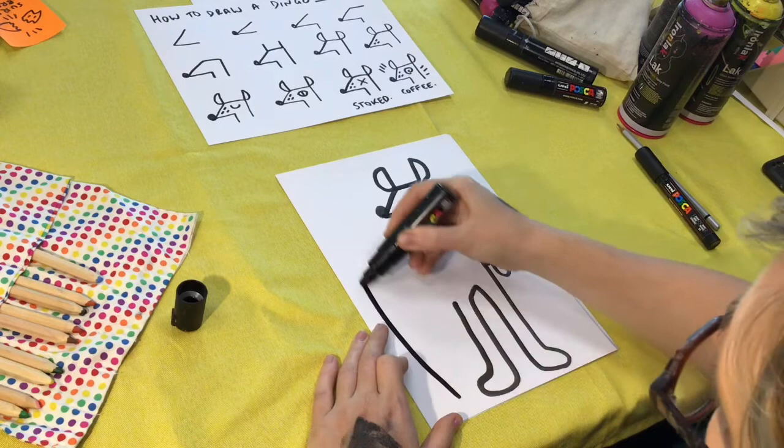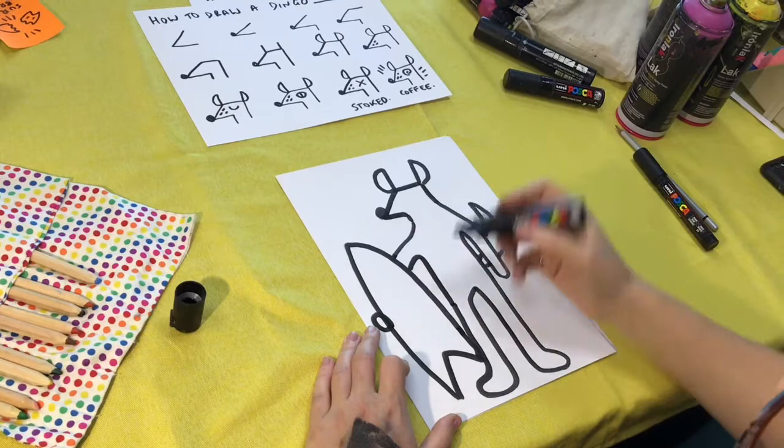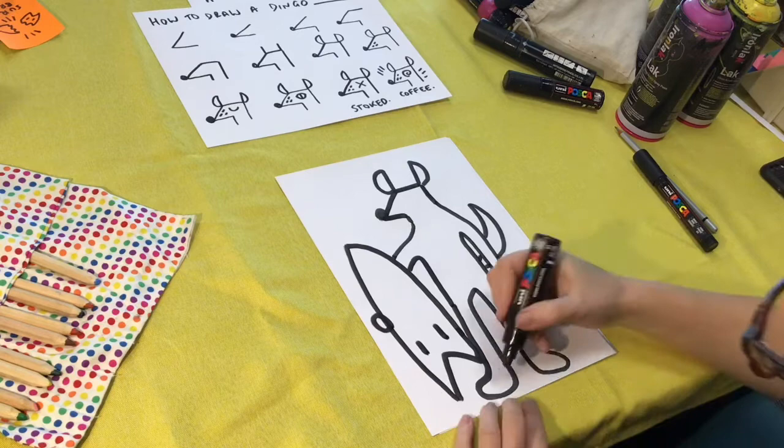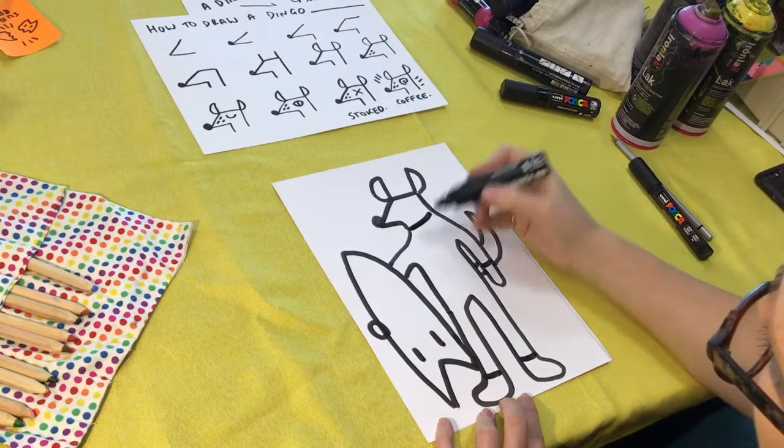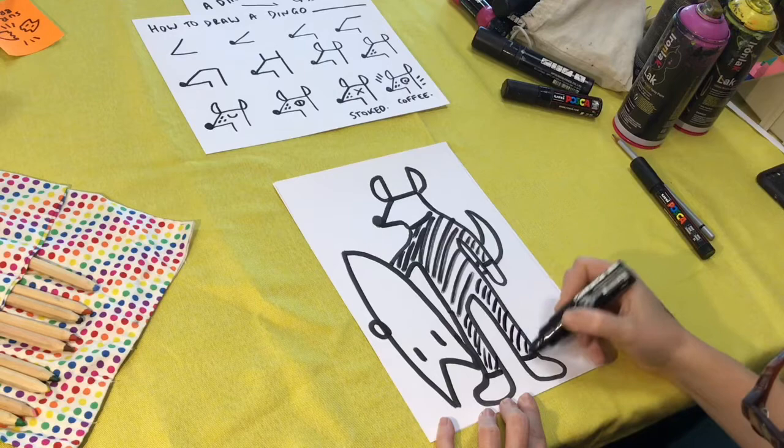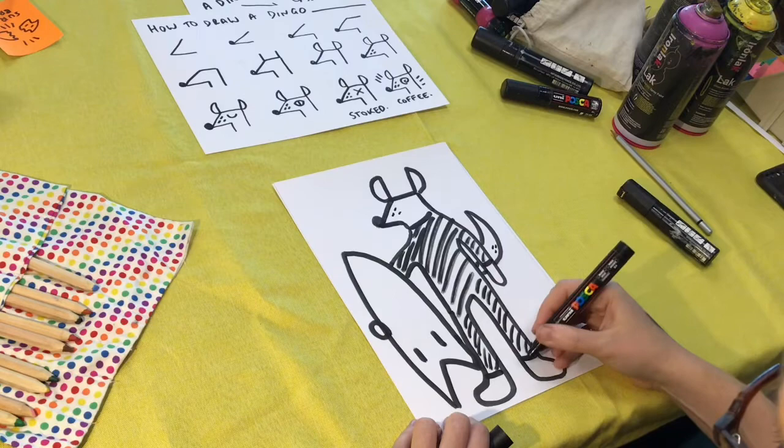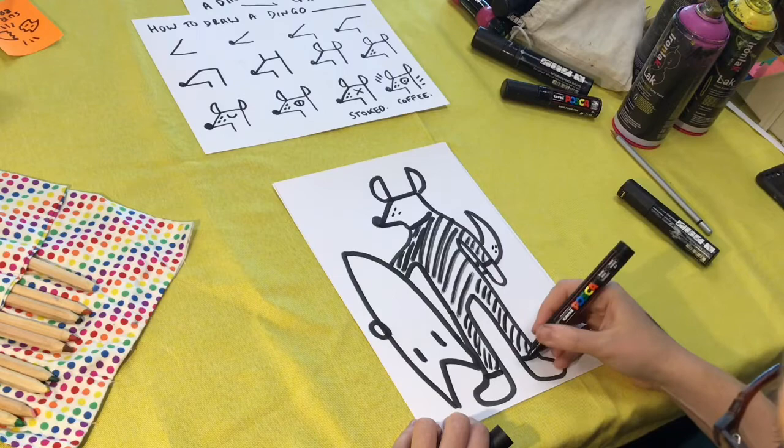Bring this arm around, chuck that surfboard in there. Chuck the other half of the arm there. Now I think this dingo's in a wetsuit, so I'm going to go like this. Fill her in real quick. Swap to my smaller pen. And then put some little effects.